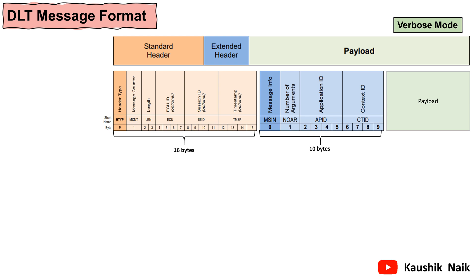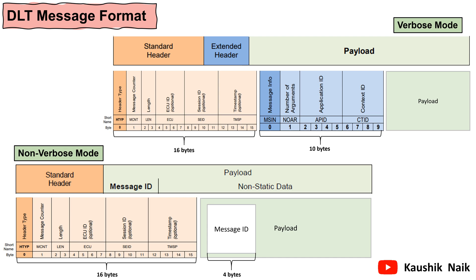These two headers consist of different parameters which I will explain in detail in the coming slides. In non-verbose mode, only a part of the header will be appended to the log message. Only the Standard header will be appended, and the Extended header will be part of the FibEx file. To identify the Extended header from the FibEx file for a particular log message, a 4-byte message ID is added at the beginning of the payload. Based on the message ID, the DLT client can fetch the extended header from the FibEx file.